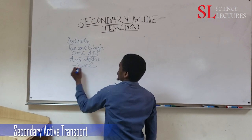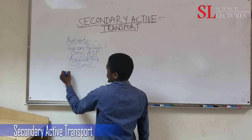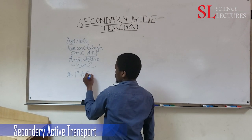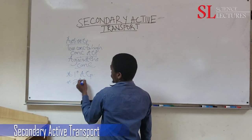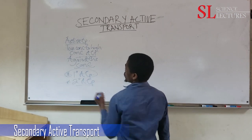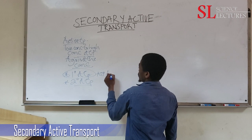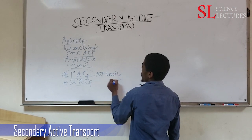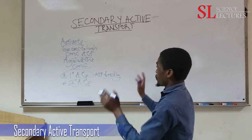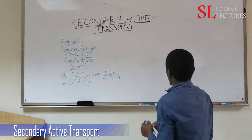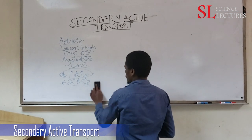Active transport is divided into two types: primary active transport and secondary active transport. In primary active transport, energy is used directly in the form of ATP. Now we are going to see how primary and secondary active transport differ.